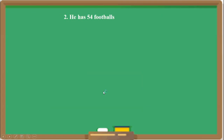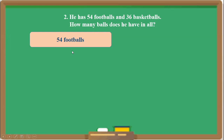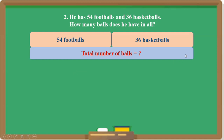Now see question number 2. Mr. Chandra has 54 footballs and 36 basketballs. How many balls does he have in all? We will find the total number of balls. For 54, that is 5 tens and 4 ones. For 36, that is 3 tens and 6 ones.